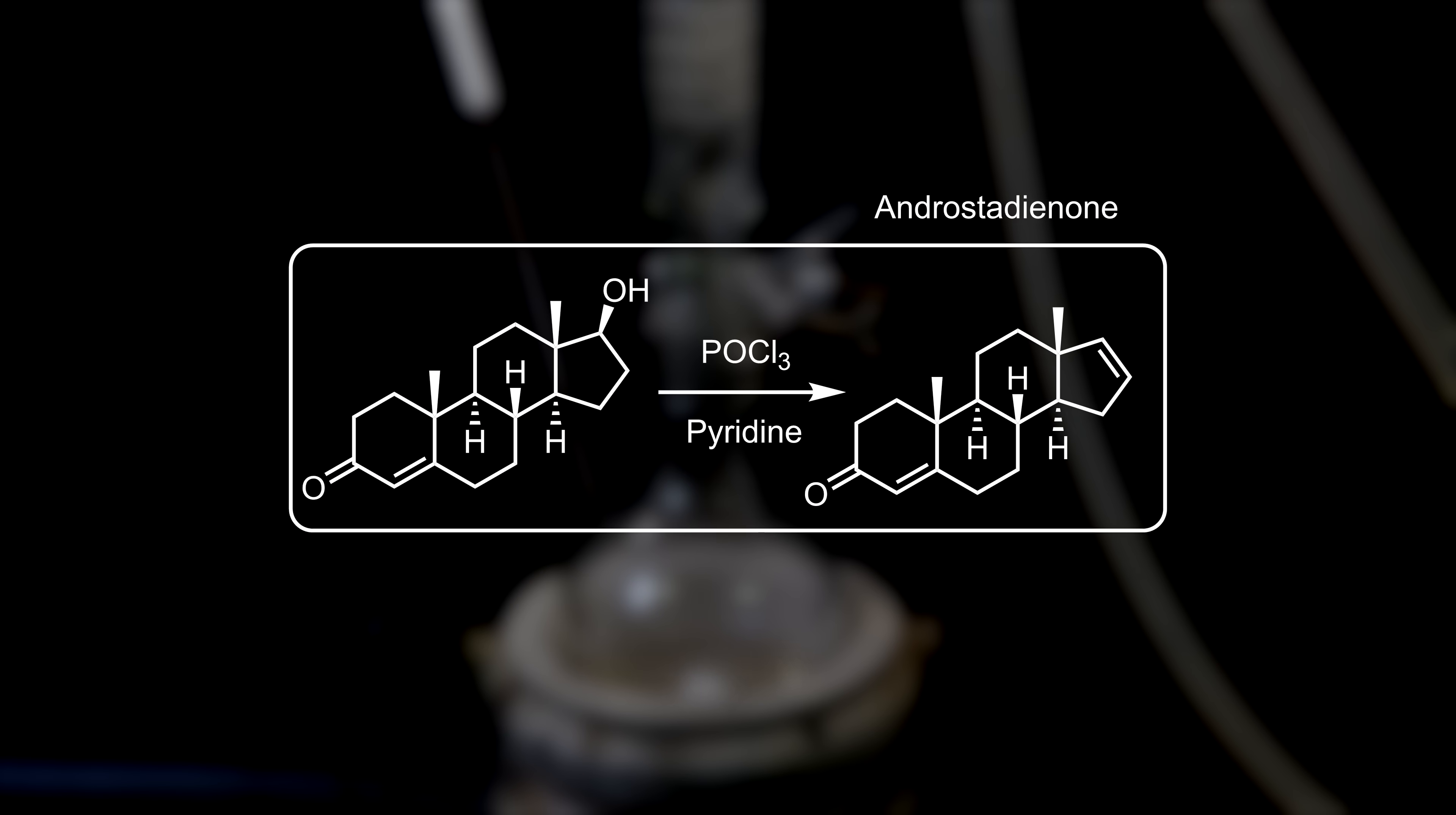In this reaction, the alcohol of testosterone is dehydrated to an alkene. The mixture of pyridine and phosphorus oxychloride, is a typical mixture to dehydrate alcohols, and will work for many substrates. Since steroid chemistry is just alkane chemistry, there are no exceptions that need to be considered.